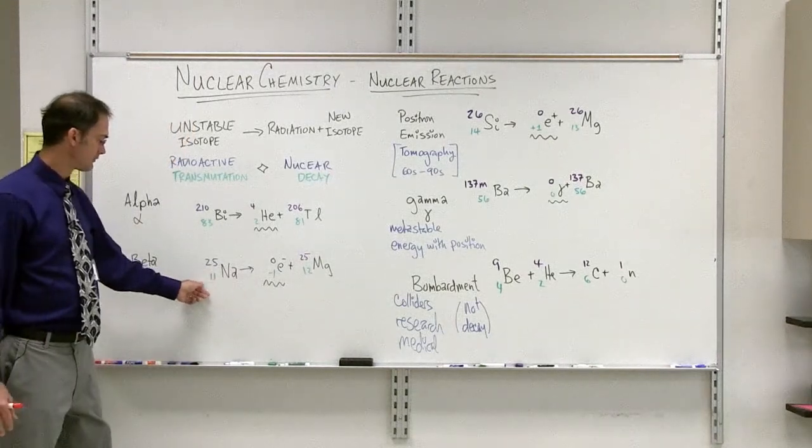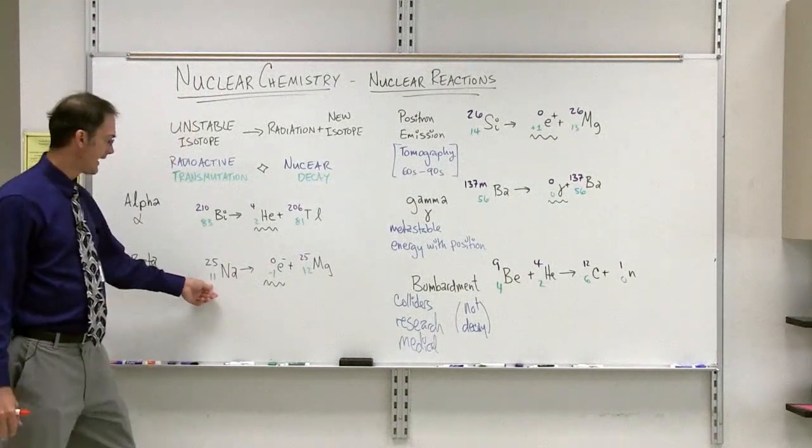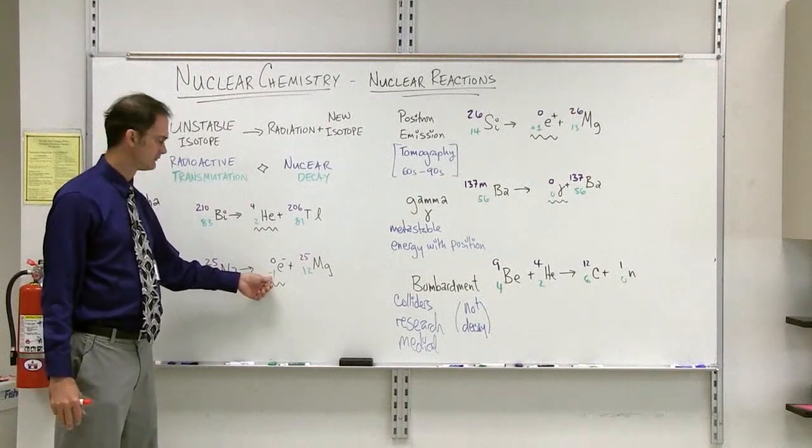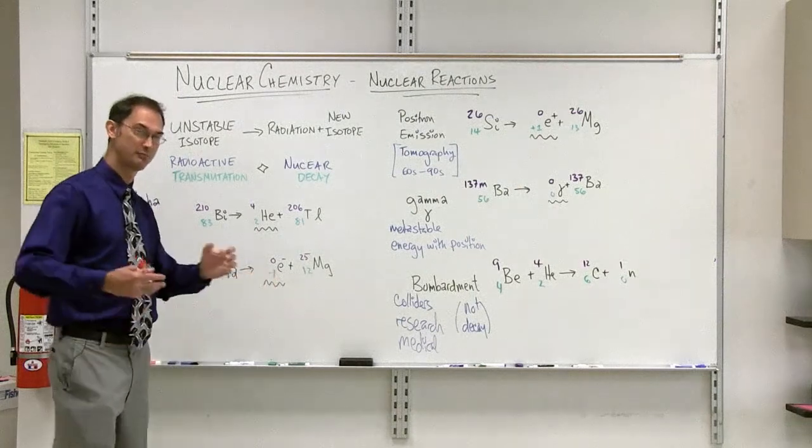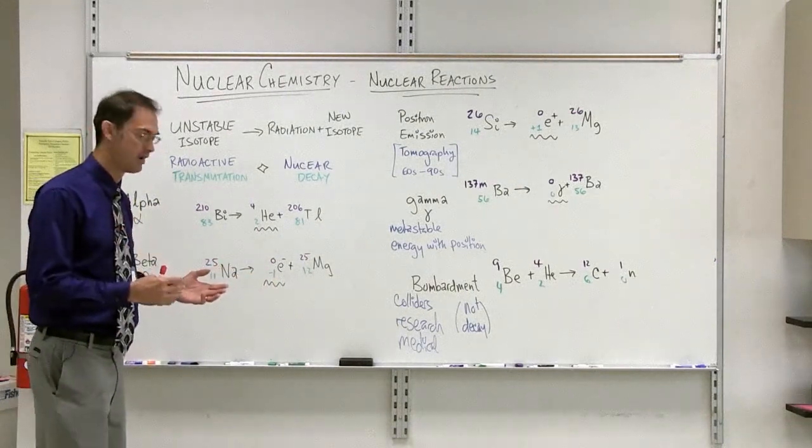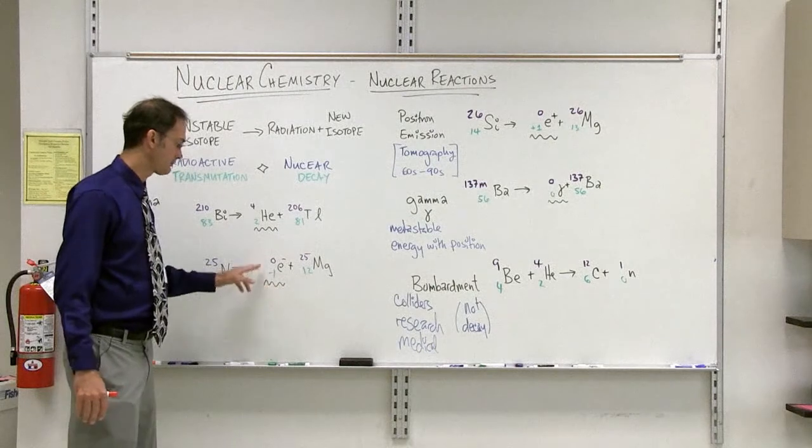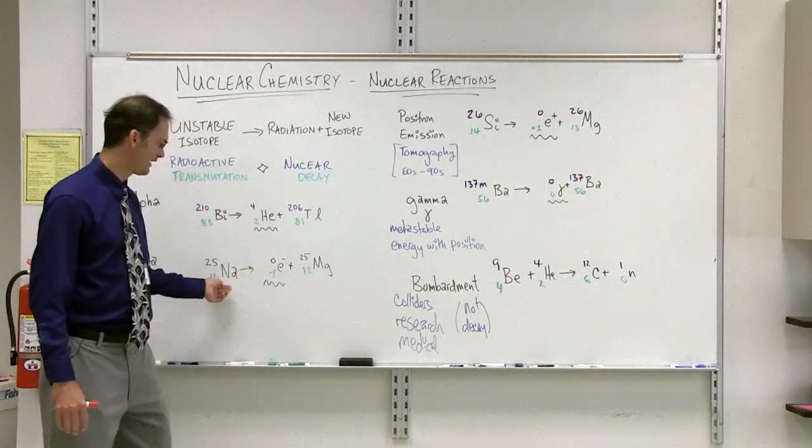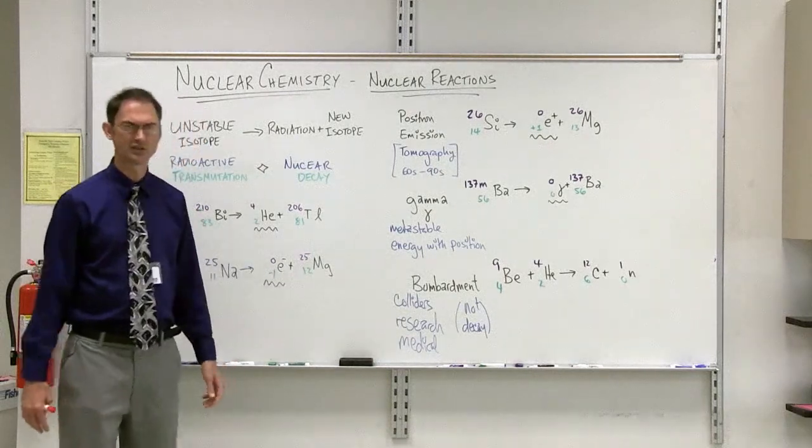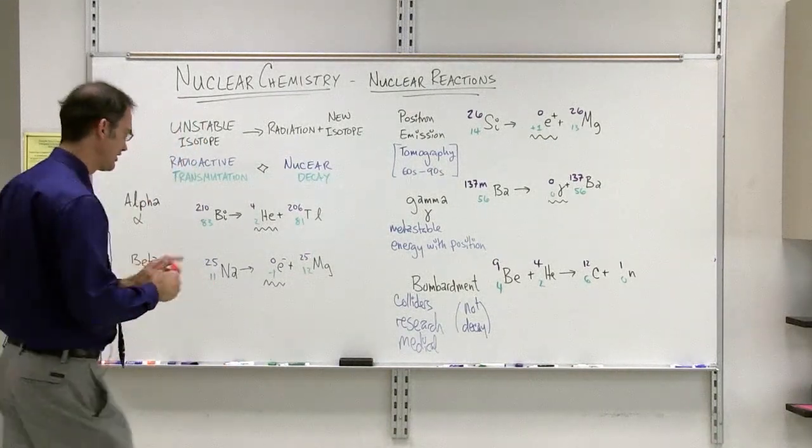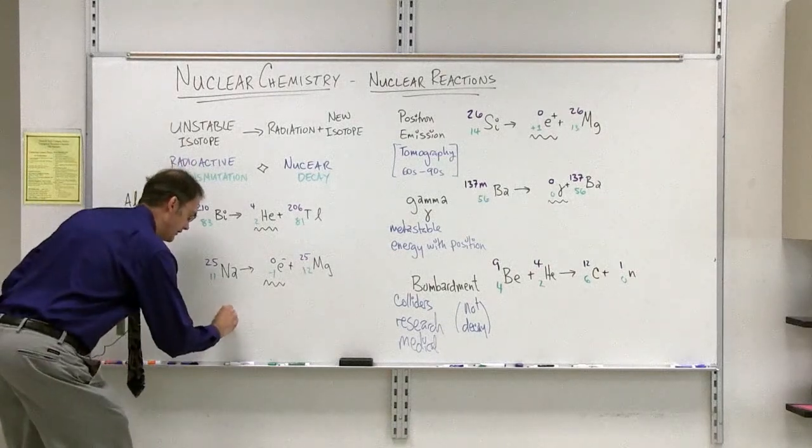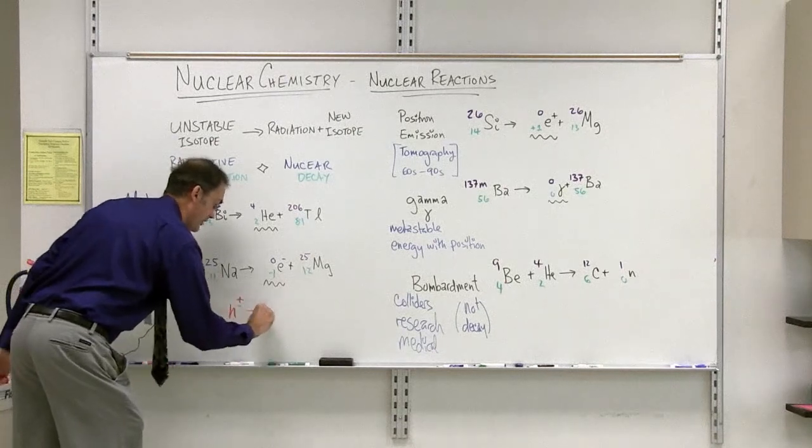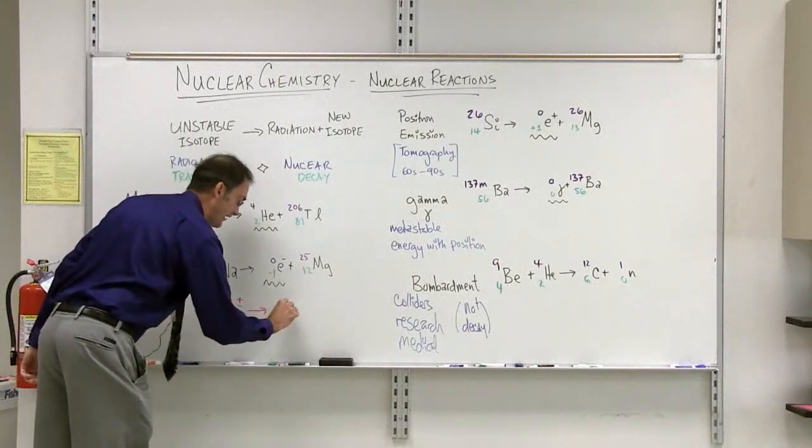We have 11 protons here, and then negative 1. What does that mean? Well, actually, it doesn't mean we have negative 1 protons. It means we have a charge of negative 1 because this is an electron, as mentioned before. So somehow, how did we have 11 protons and we end up with—this is strange. Well, as I've mentioned in a previous video, the neutron is not a stable particle.